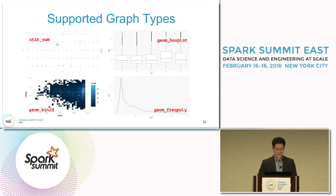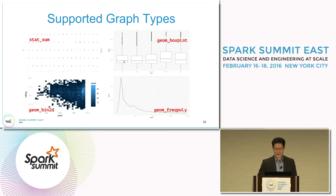stat_sum shows the sum of unique values, where bigger dots represent higher counts. geom_boxplot draws a box and whisker plot where the median value and interquartile range are drawn as a box.